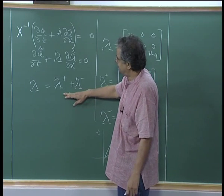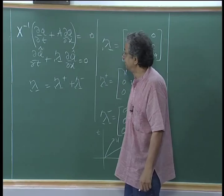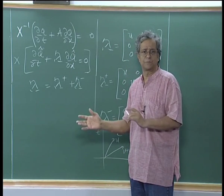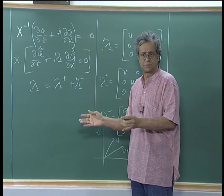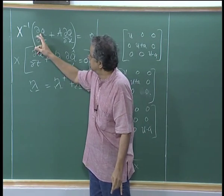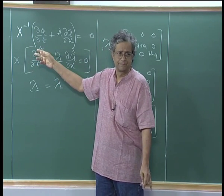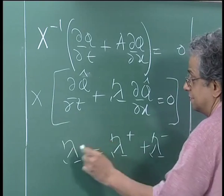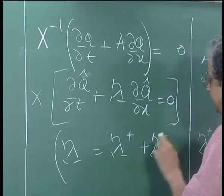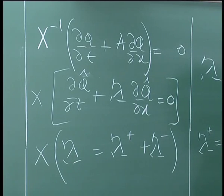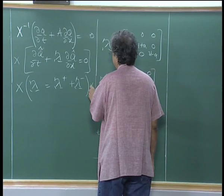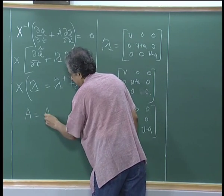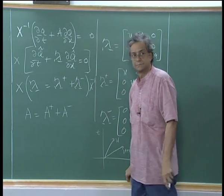If I go back to the original coordinate system, I would pre-multiply by X. We transform from conservative variables ρ, ρu, ρEt using X inverse to q̂₁, q̂₂, q̂₃, and now I am transforming back by pre-multiplying by X. This lambda, when I pre-multiply by X and post-multiply by X inverse — since matrix multiplication distributes over addition — gives me A equals A⁺ plus A⁻.